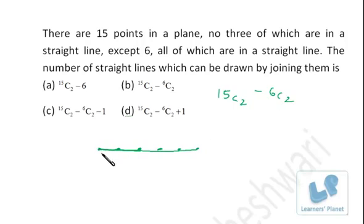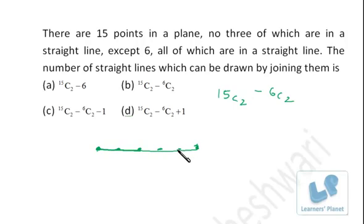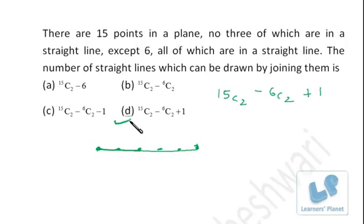When I deducted all combinations of two points from the six collinear points, I also removed the combination that gives the one actual line through those six points. So I need to add back one. The complete answer is 15C2 minus 6C2 plus 1.